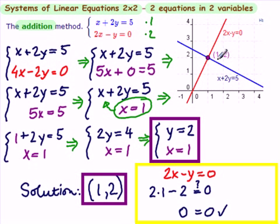Here is the graph of x plus 2y equals 5. Here is the graph of 2x minus y equals 0. And they intersect at the point 1, 2.